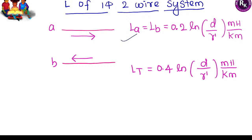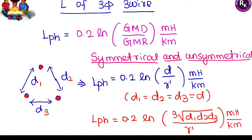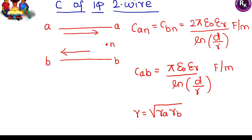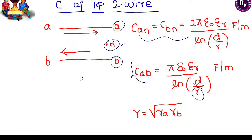For a single-phase two-wire line, inductance formulas are written separately for phase A, phase B, and the total inductance. For three-phase lines, the general inductance per phase is calculated differently for symmetrical and unsymmetrical configurations. For capacitance: single-phase capacitance per phase (line to neutral) and line-to-line capacitance formulas are given. For capacitance calculations, the factor 0.7788 is not considered because there is no internal flux for capacitance — use the actual radius directly.